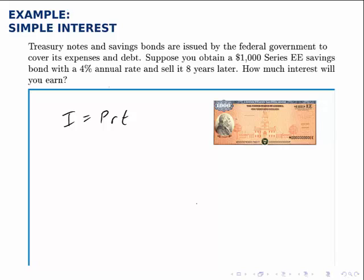R is the interest rate, so that will be the 4%. But remember that when we put it into an equation, we put it in as a decimal, so we'll put it in as 0.04.